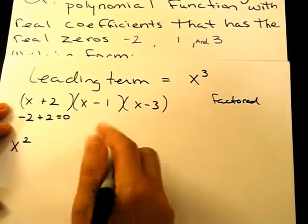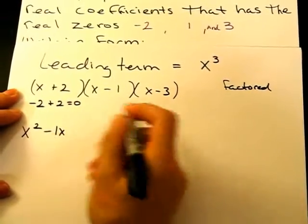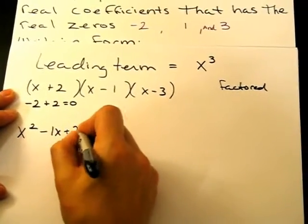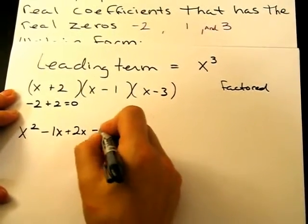x times negative 1 is negative 1x. 2 times x is 2x. 2 times negative 1 is negative 2.